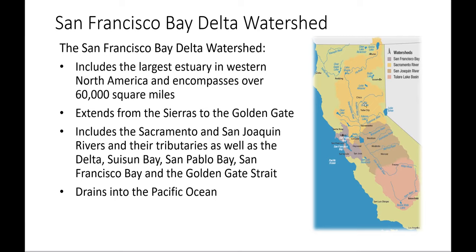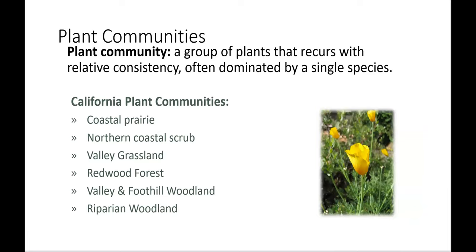Within our watershed, we're looking at several plant communities: coastal prairie, northern coastal scrub, valley grasslands, redwood forests, valley and foothill woodlands, and riparian woodland. Recognizing what plant community you are working within is a really good way to understand different regions, though it can sometimes be challenging in an urban environment.